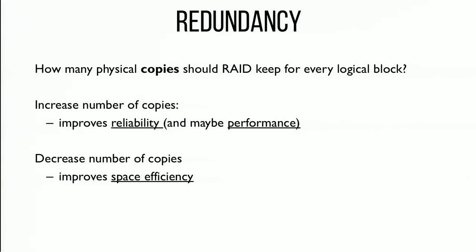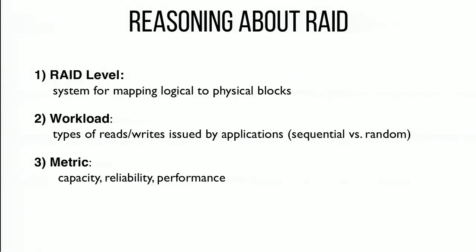In this lecture we'll cover four RAID levels: zero, one, four, and five. RAID levels two and three are systems nobody uses and don't make sense given current technology. We'll look at different workloads — random and sequential behave very differently — and at reads versus writes. Our metrics will be capacity, reliability, and performance.